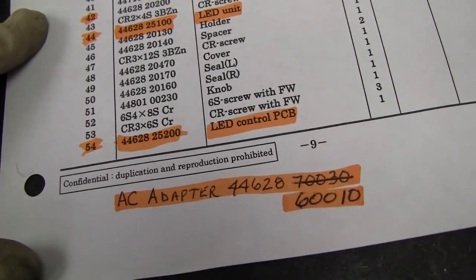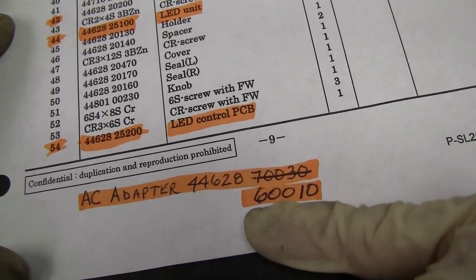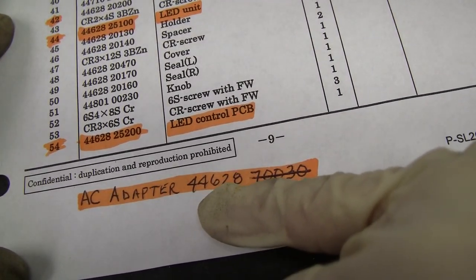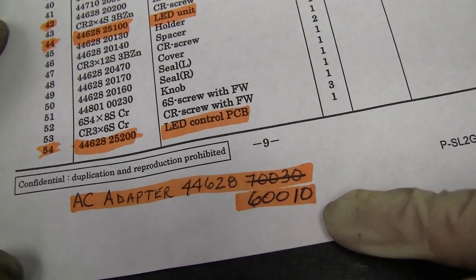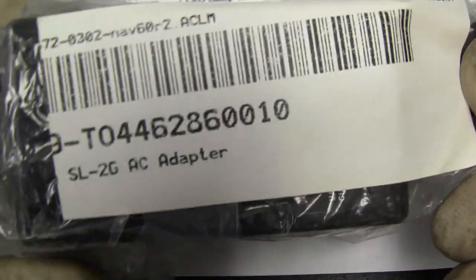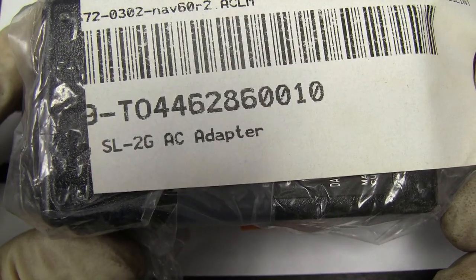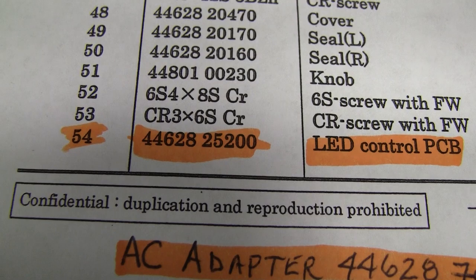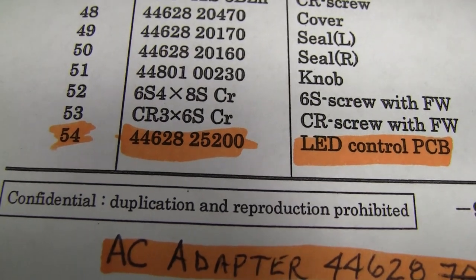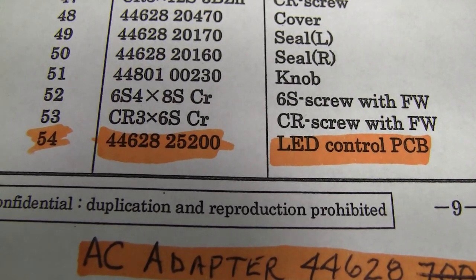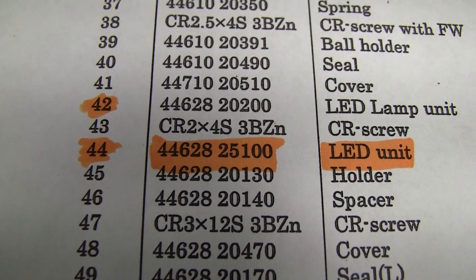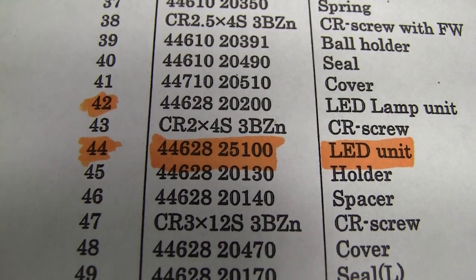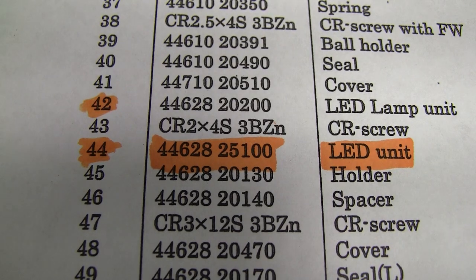The AC adapter for the 2G is this number: 4462860010. That's the LED control PCB, and that's the number of the LED unit itself.